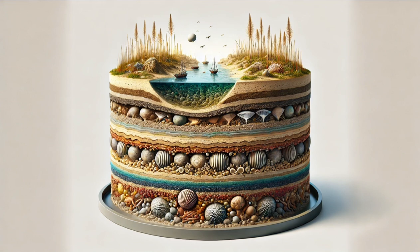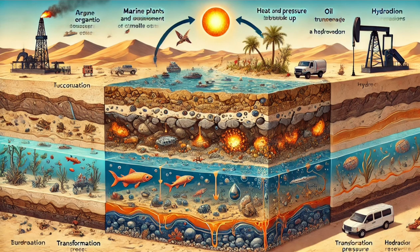Step 3: Transformation into Hydrocarbons. Under extreme heat and pressure, the buried organic material went through a chemical transformation. Over millions of years, this pressure cooker effect turned the organic matter into hydrocarbons — essentially the oil and gas we know today.